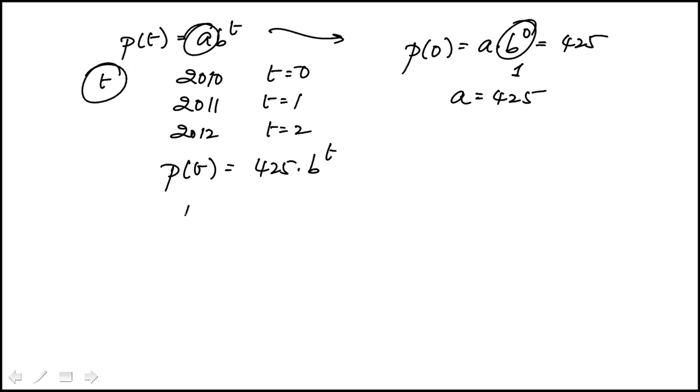Now we're given that in year 2012, which is t equal to 2, the population is 612. So we need to replace t with 2, and that's what's going to give me the value of b.